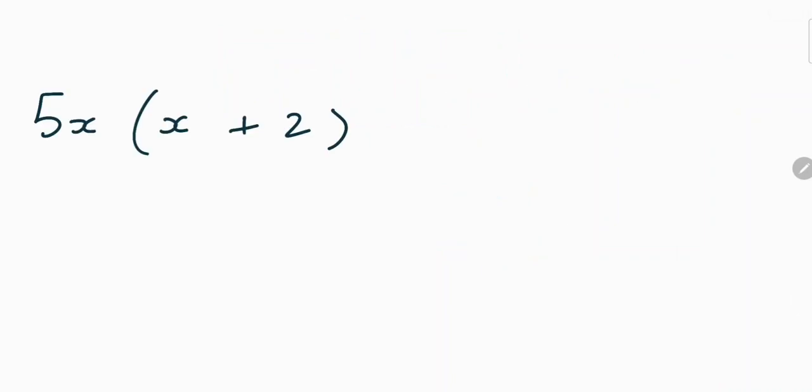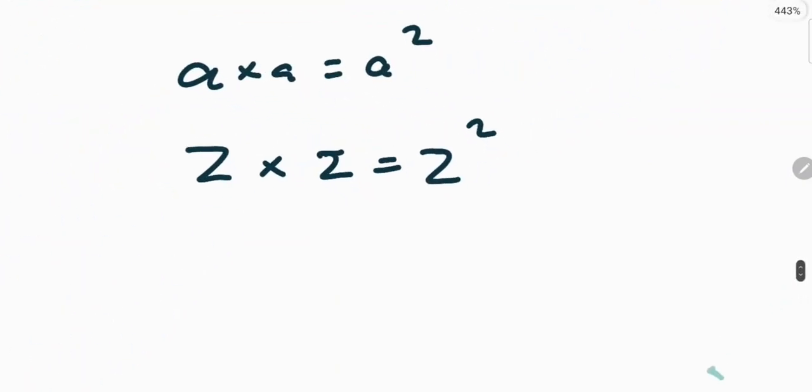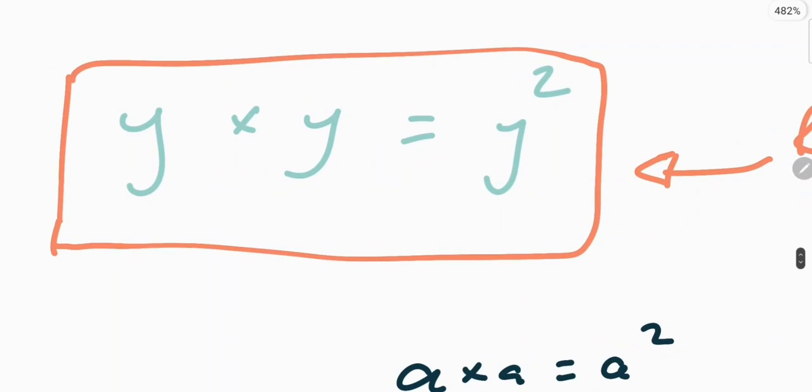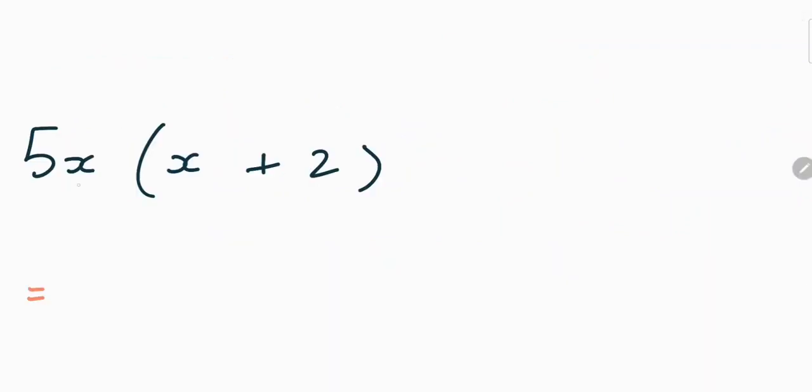Here we have a more tricky example: 5x times (x + 2). Now, you might be thinking, we have a number here, a letter here, and a letter here. What do we do? Well, it's the same principle. It's looking back at this example here, and this rule. We know that 5x times x would give us 5x squared. Now, 5x times 2 would give us 10x.